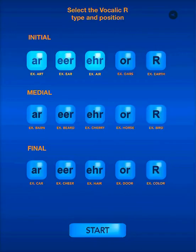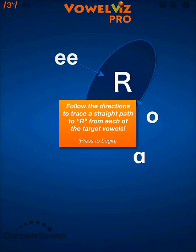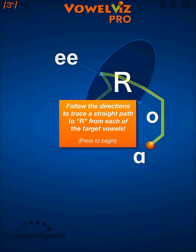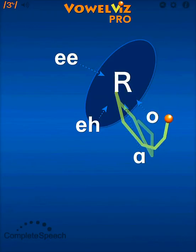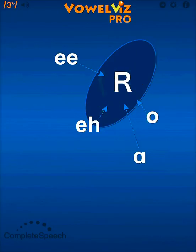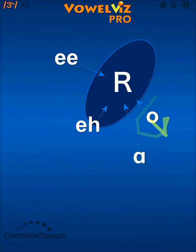You can select as many or as few flashcard sets as you want to practice, and then press Start to begin and go to the practice screen. When you open the practice screen, there is a prompt that explains that you should try to create as straight a line as possible from the vowel area to the R target. Experienced VowelViz users will notice that the vowel targets are gone and that the vowels that precede Vocalic R are now represented by English letters instead of IPA symbols. These letters are distributed throughout the screen according to where the vowel is pronounced.